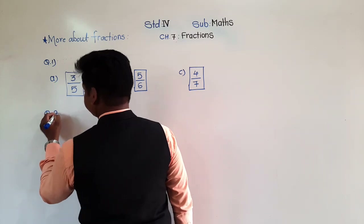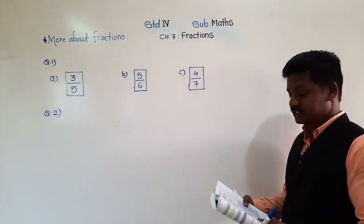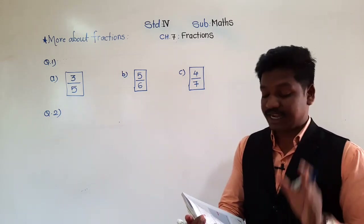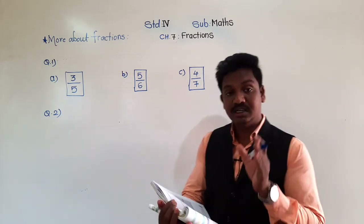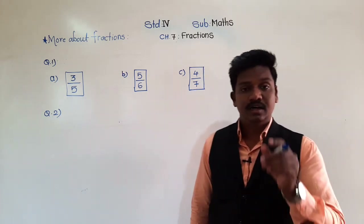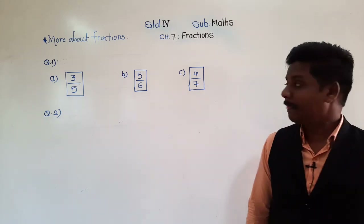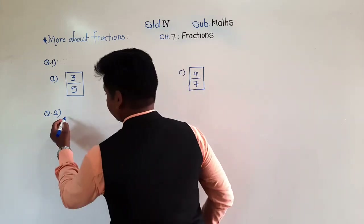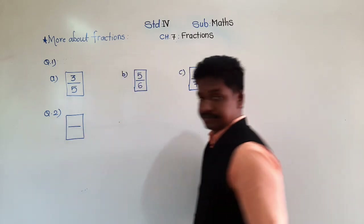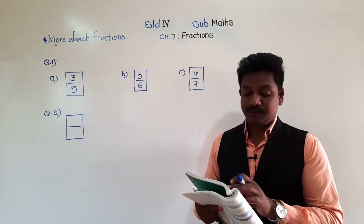Question 2. Turn to the next page — there is question 2. See question 2: write the fractions which represent the unshaded portion in each figure. Here we have to write a fraction for the unshaded portion. The box is given there and you have to write there only.